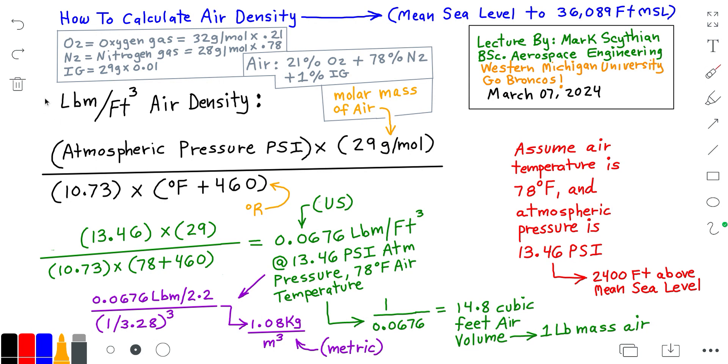In this video, we will discuss how to calculate air density between mean sea level to 36,089 feet above mean sea level.